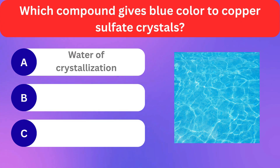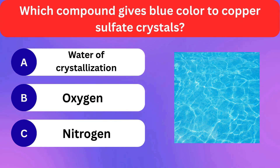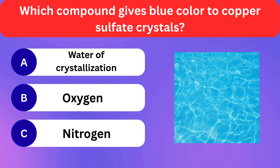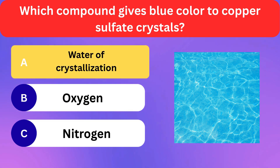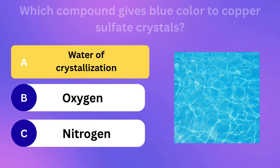Which compound gives blue color to copper sulfate crystals? Water of crystallization, Oxygen, Nitrogen. Correct answer is water of crystallization.